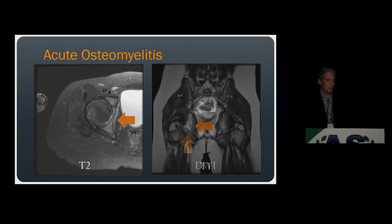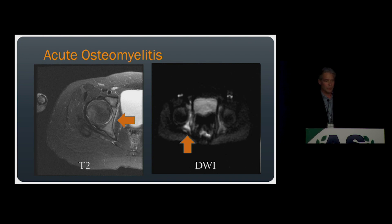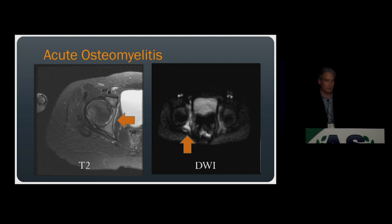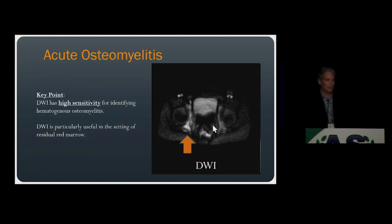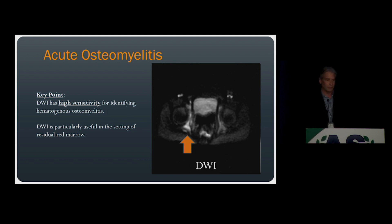This is where DWI is very helpful. On the diffusion-weighted image, we can clearly see increased signal within the right acetabulum in the area of periosteal edema, representing restricted diffusion consistent with hematogenous osteomyelitis. The next key point: DWI has high sensitivity — not specificity — for identifying hematogenous osteomyelitis, and it can be particularly useful for diagnosing it in the setting of residual red marrow, such as in pediatric patients or in imaging areas of large red marrow like the pelvis.